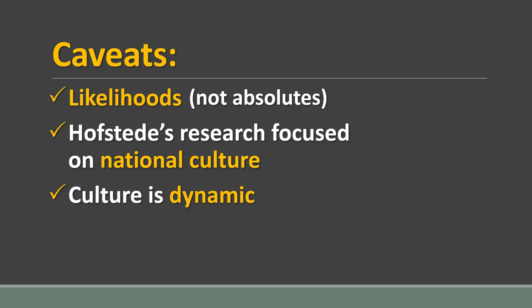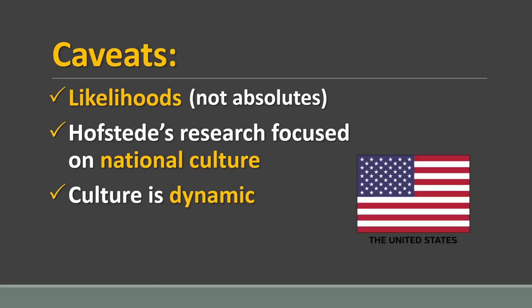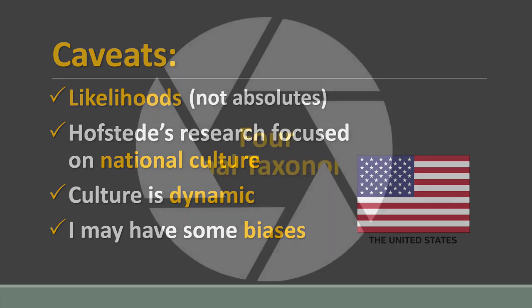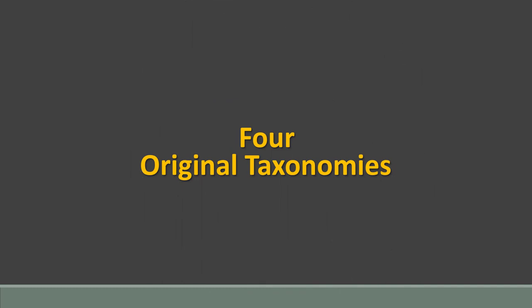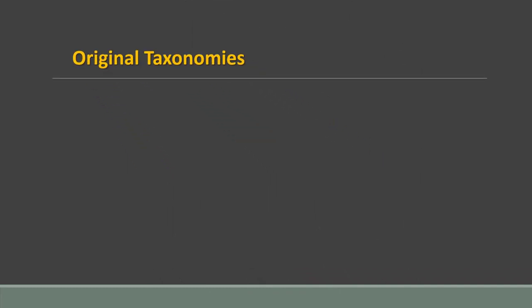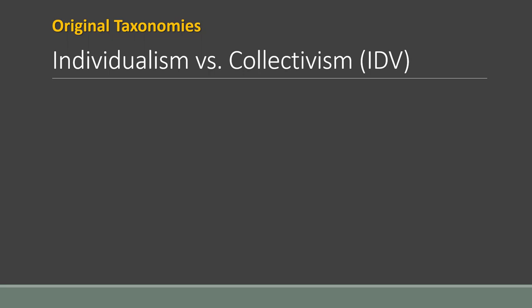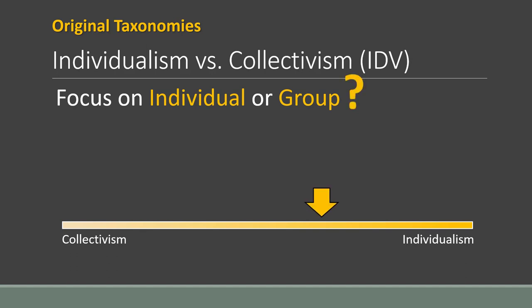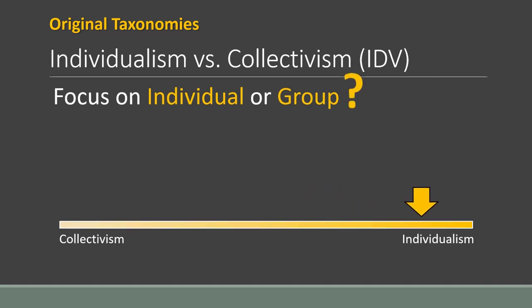Full disclosure: I'm from the United States, so you may hear some of my biases in our discussion. With that in mind, we'll focus on Hofstede's four original taxonomies, starting with the one you are likely most familiar with—individualism versus collectivism, abbreviated as IDV. Collectivism would be on one side of the scale, with individualism on the other. Think of it as the I versus we or us mentality. Which is more important—the individual or the group? The higher the number, the higher the culture loads on the individualism side.